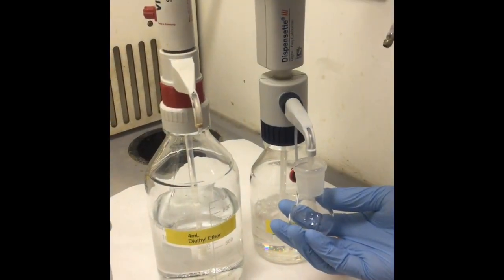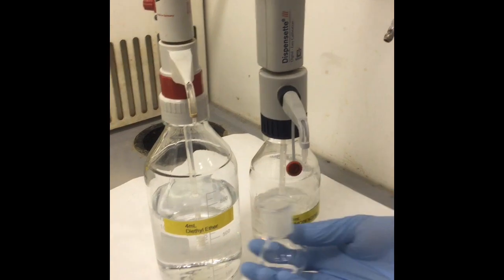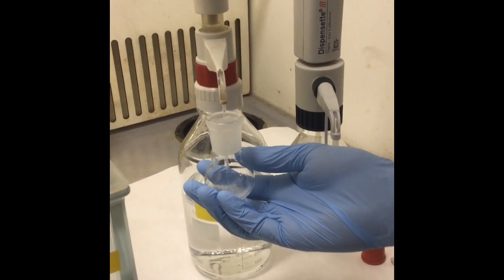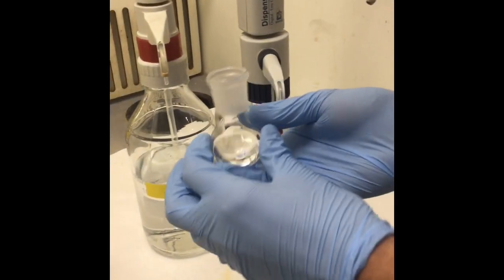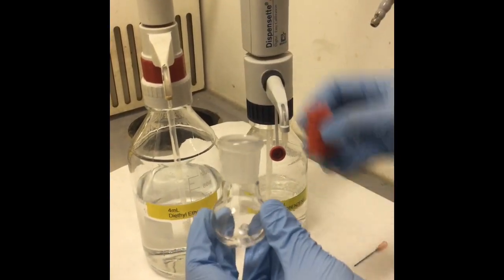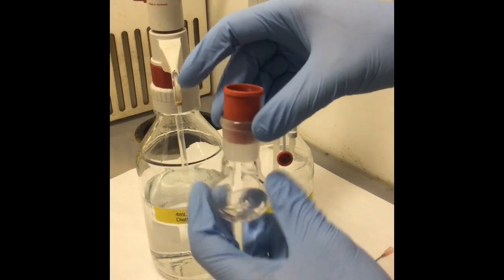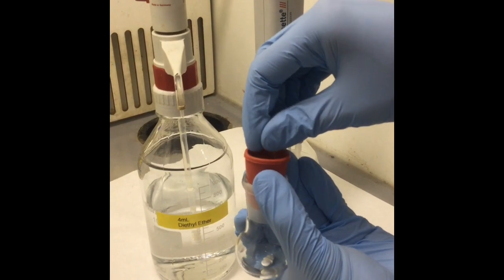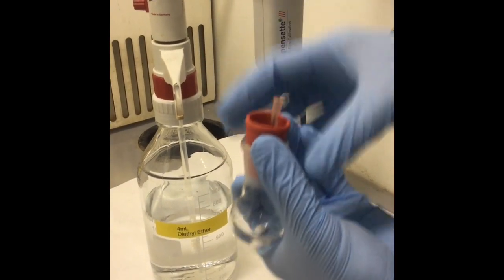1.1 milliliters of benzoyl bromine and 4 milliliters of diethyl ether were added into a round bottom flask. A small magnetic stirring bar was placed into the round bottom flask. A stopper was then placed into the flask and a syringe was placed into the stopper to vent any gas that might build up during the reaction.